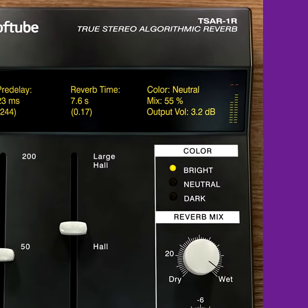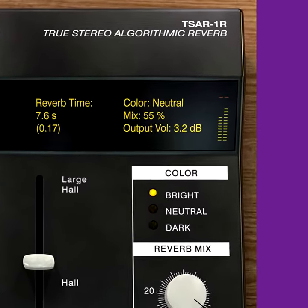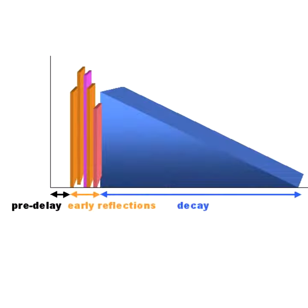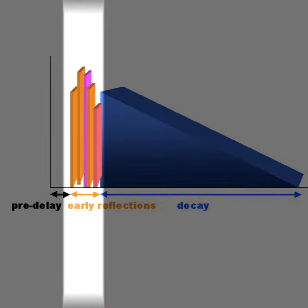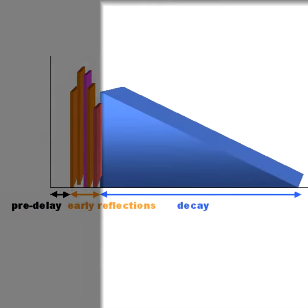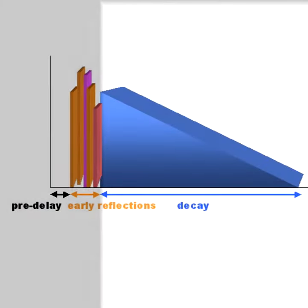Algorithmic reverb models three main reverb characteristics: pre-delay, early reflections, and the decay of the myriad of reflections bouncing around in a real room.